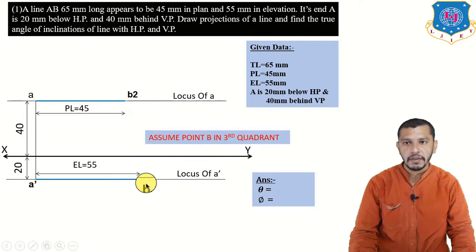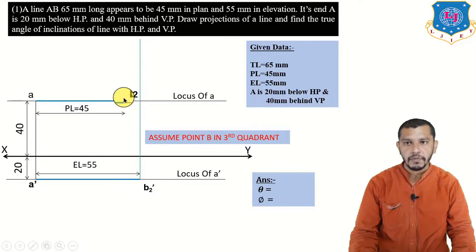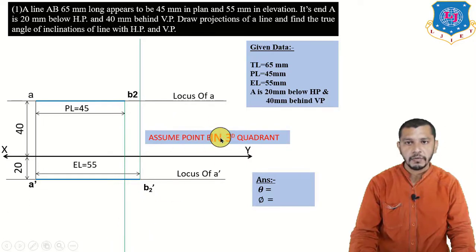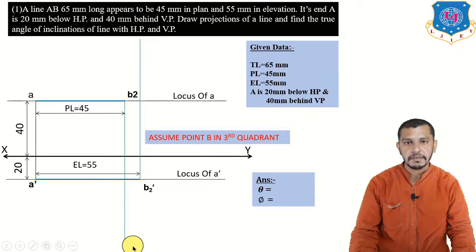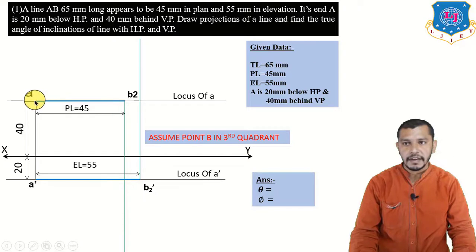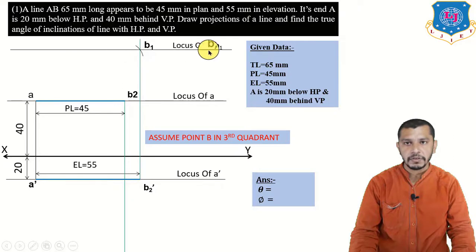Draw a straight line from B2-dash in the direction of the locus of B, and from B2 draw a straight line in the direction of the locus of B-dash. Since we assumed point B in the third quadrant, the plan of B will be above XY and the elevation of B will be below XY. On this projector we get B1, and on the other projector we get B1-dash. Measure true length 65 mm, take center at A, give an arc on this projector to get B1 — this gives the locus of B.